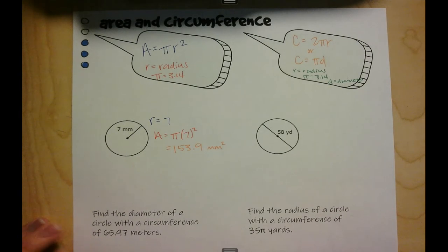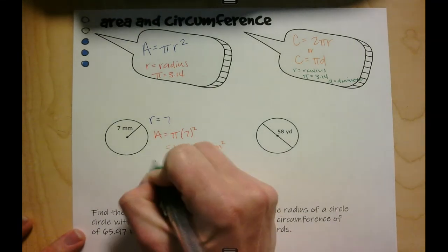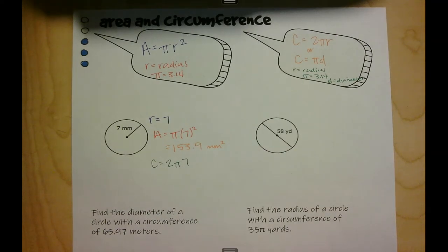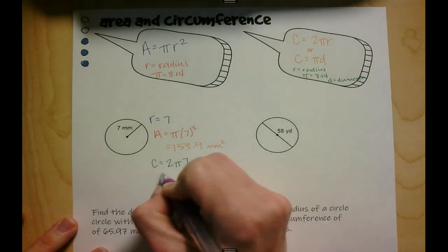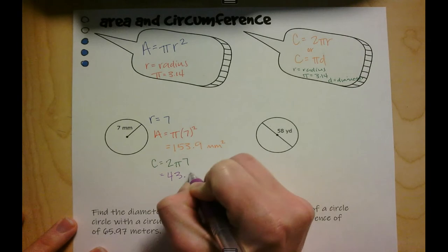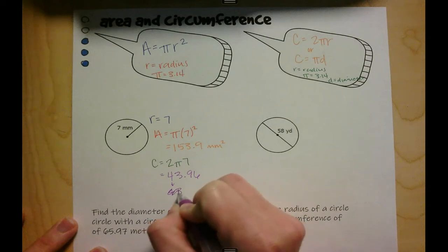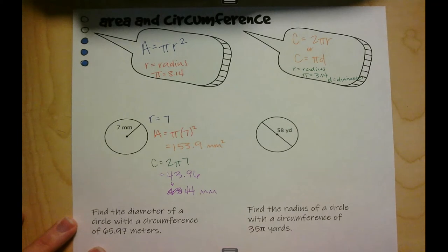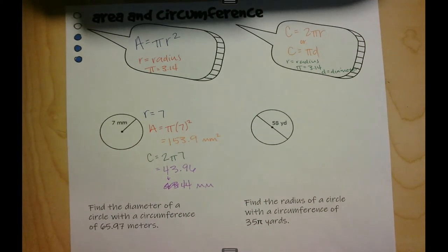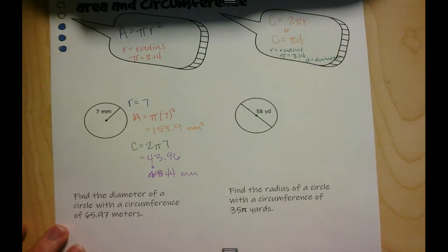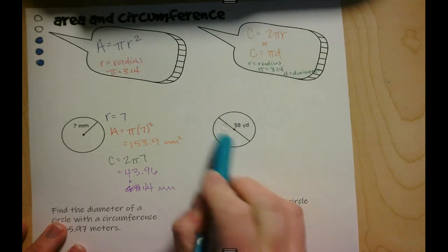Since we're talking about area, the units are squared — so millimeters squared. For circumference, our radius is 7, so circumference equals 2 times pi times 7. Plugging that in, we get 43.96, which rounds to 44 millimeters. Circumference is just the perimeter around, so the units are just millimeters, not squared.